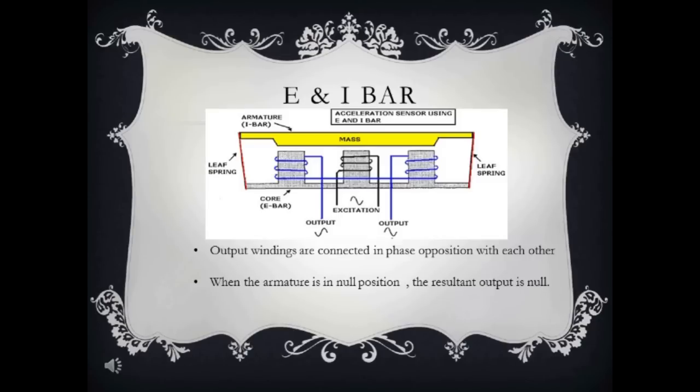Is he gone? Yeah, I think he's gone. Alright, let's move on. The output windings are connected in phase opposition to each other, so that when the arm is in null position, then the resultant output is null. Keep in mind that movement to one side causes the amplitude of one phase to exceed the other. The output is a difference in the two phases. See, it's easy.